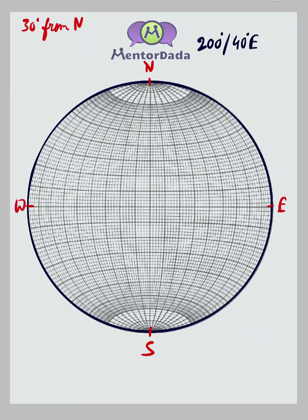Our next step would be to introduce the tracing paper. So we will draw the primitive circle first and mark north, east, south and west respectively.